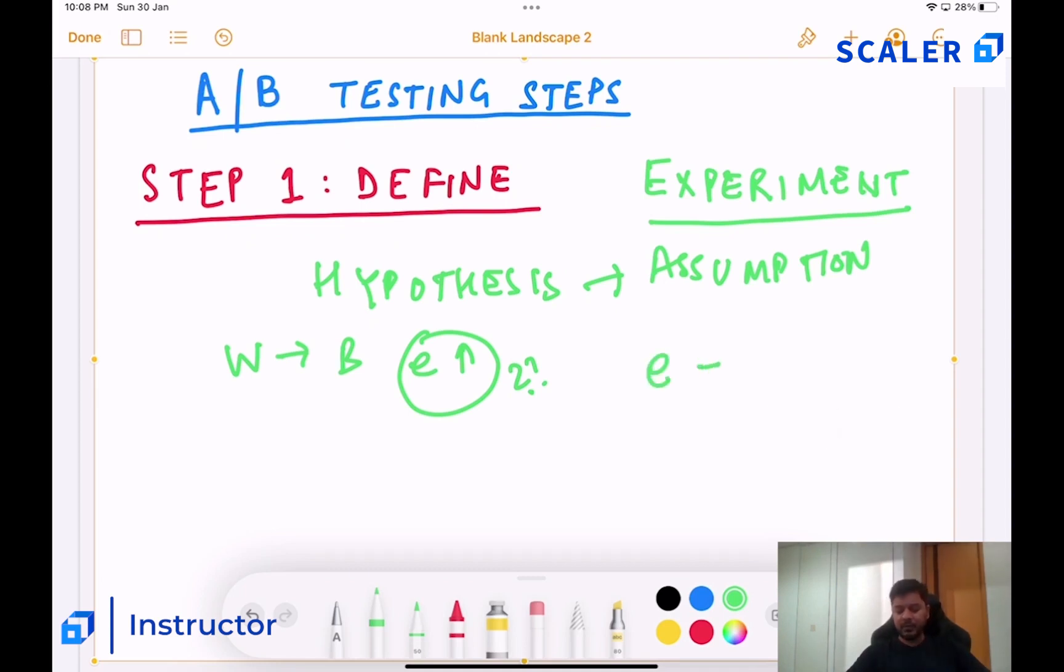In this scenario, we can define engagement as number of queries divided by the number of visitors to the website. That is a metric that we can define as engagement. Again, different people might propose different metrics. But let us assume that within the company, this is the accepted metric that everybody tracks. So let us assume that. And this is an agreed upon metric for this experiment.